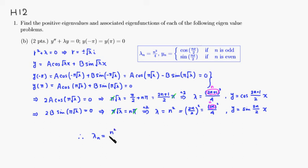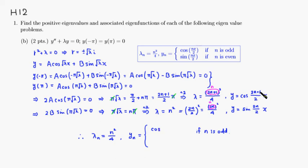The corresponding eigenfunction is then written in unified form. If N is odd, you have the cosine function — instead of 2N plus 1, they put N over 2 times X. If N is even, you have the sine function — they use N over 2 times X as well. So the eigenfunction is cosine of (N over 2)X for odd N and sine of (N over 2)X for even N.